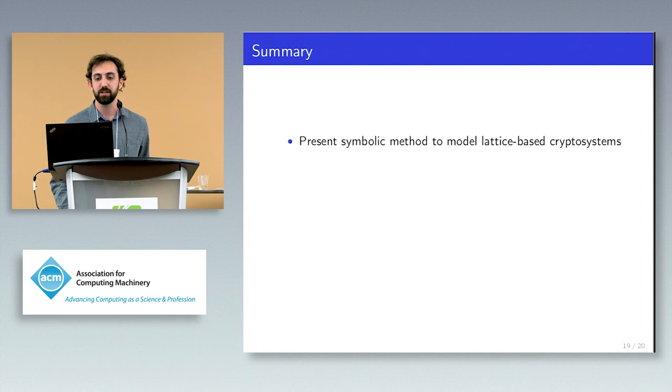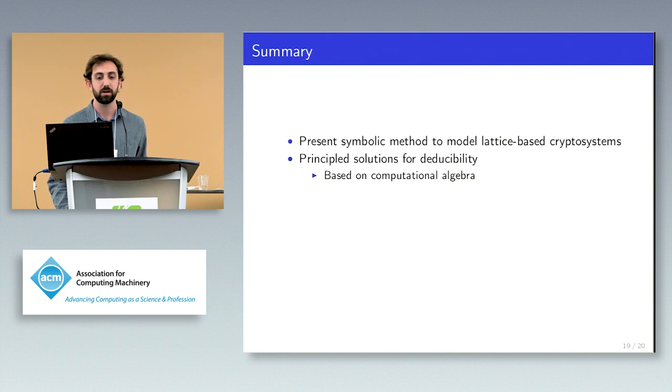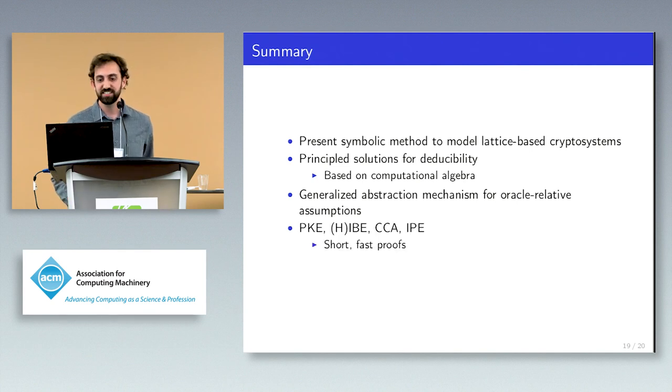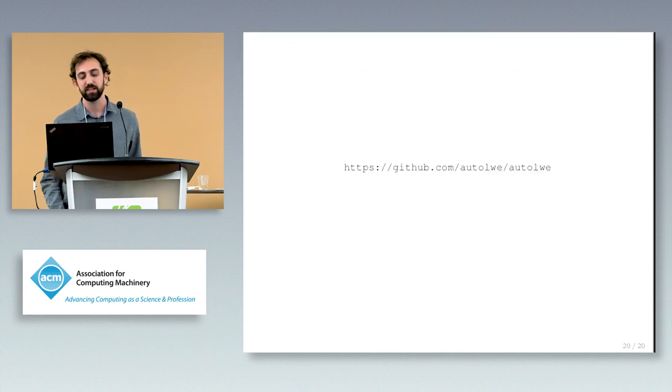In summary, we present a symbolic method to model lattice-based cryptosystems. In order to do so effectively, we give principled solutions for the deducibility problem, based off of well-known techniques in computational algebra, as well as a generalized method to express lemmas and hardness assumptions relative to a given oracle. These extensions allow us, in total, to model five encryption schemes with various degrees of sophistication. All mechanized proofs are relatively short and fast to verify. I encourage you to check out our paper, as well as our repository, which I list here. Thank you.